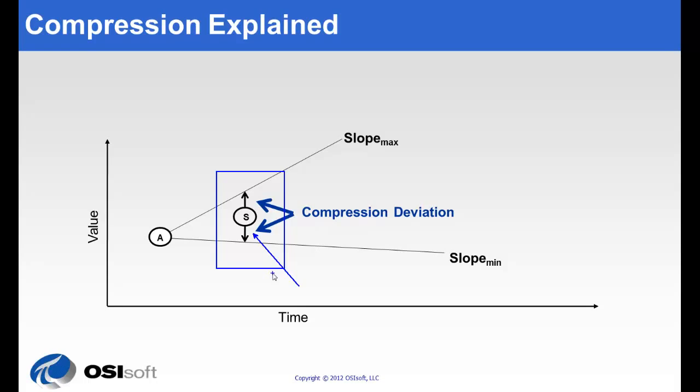As time goes on, it's entirely possible that this snapshot won't be needed in the PI archive. The first step is to calculate these slopes. We have an archive value, a snapshot value, the compression deviation settings, and we'll calculate the maximum slope and the minimum slope. A reference slope is calculated using the incoming event and compared to the maximum slope and the minimum slope. Then we have a decision to make.